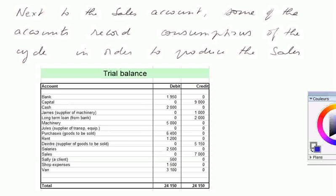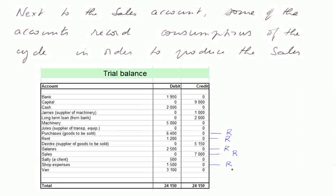Some of the accounts record consumptions of the cycle in order to produce the sales. Let's check them out — we shall call them R for revenue. The bank account is not a consumption account, nor the capital, nor cash, nor James. James is a creditor because he supplied machinery. The long-term bank loan is not a charge account — it's a liability account. Machinery is not a charge account; it's an investment. Purchases is a charge account, which I note with an R. The rent is a charge account. Salaries is a charge account. Sales is also an account that will go into the income statement. Shop expenses is a charge account. The van is not.